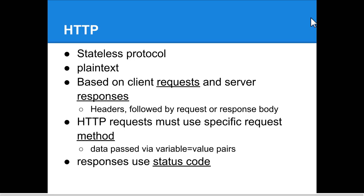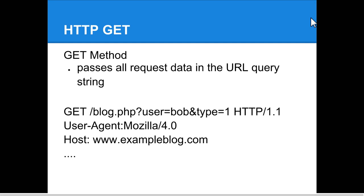HTTP is a stateless protocol — it doesn't keep track of state, so there are no timeouts and nothing on the server side tracking whether a user is still logged in. HTTP is also completely plain text. HTTP is built on client requests and server responses, and these messages are built with headers followed by the request or response body. HTTP requests must use a specific request method, and in these methods data is passed to the server as variable-equals-value pairs, delimited by ampersands or commas. Server responses use status codes.